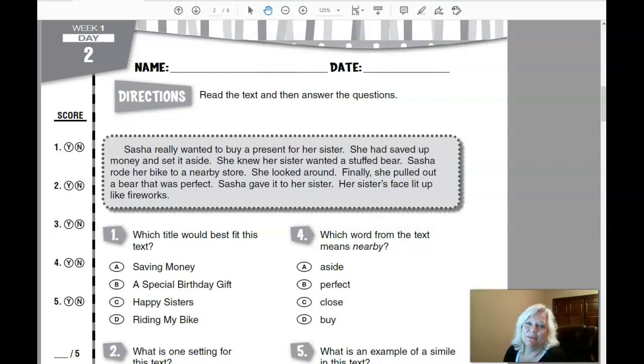Daily reading 1.2: Sasha really wanted to buy a present for her sister. She had saved up money and set it aside. She knew her sister wanted a stuffed bear. Sasha rode her bike to a nearby store. She looked around, finally she pulled out a bear that was perfect. Sasha gave it to her sister. Her sister's face lit up like fireworks.